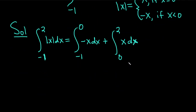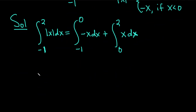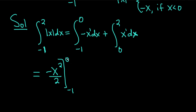Now we just integrate each piece. We apply the power rule for each integral — add 1 to the exponent and divide by the result. So the first piece gives negative x squared over 2, evaluated from negative 1 to 0. Plus x squared over 2, evaluated from 0 to 2.